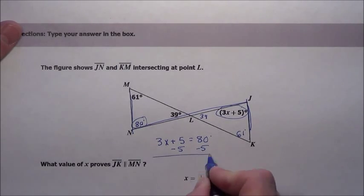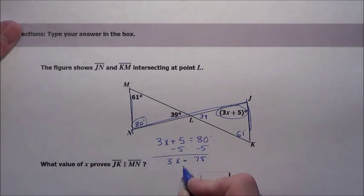Subtract my 5 from both sides. I get 3x equals 75, divide by 3, a nice 25.